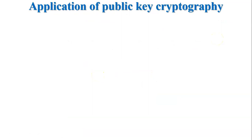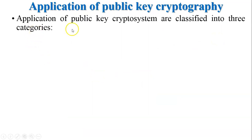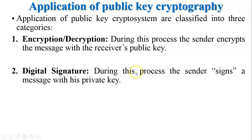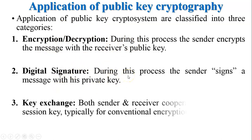The applications of public key cryptography are classified into three categories. First is encryption/decryption — the sender encrypts the message with the receiver's public key, achieving confidentiality. Second is digital signature — the sender signs the message with their private key, achieving authentication. Third is key exchange — both sender and receiver cooperate to exchange a session key, typically used for conventional encryption.